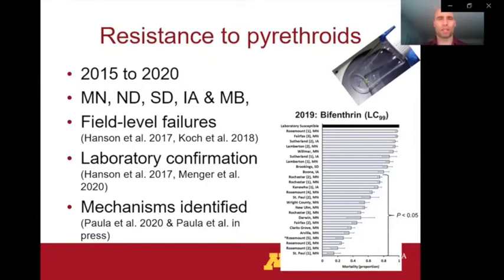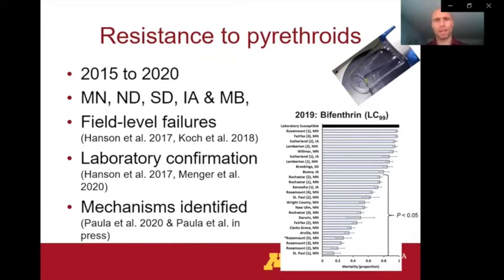We first documented this resistance in 2015, and we've been seeing it every year since. So from 2015 to 2020, every year in Minnesota, we've documented some populations at least of the soybean aphid that have resistance to pyrethroid insecticides. And not only in Minnesota — we've made documentations of pyrethroid resistance in soybean aphids in North Dakota, South Dakota, Iowa, and to the north of us in Manitoba. This has included field level failures where we've received reports from growers, consultants, and others about applications of pyrethroid insecticides failing to provide the expected level of control against this pest.